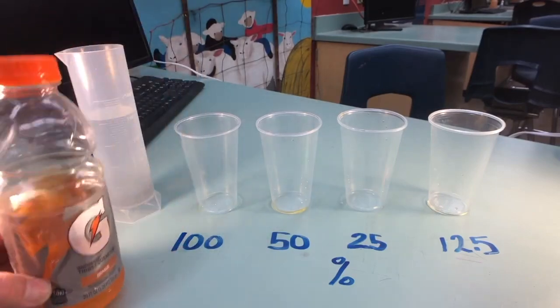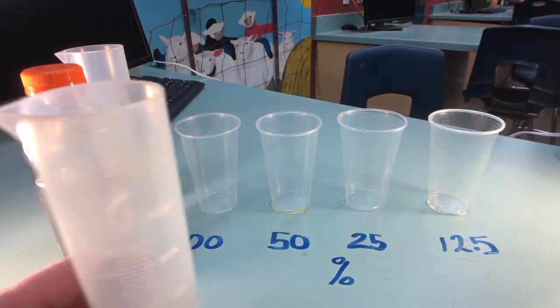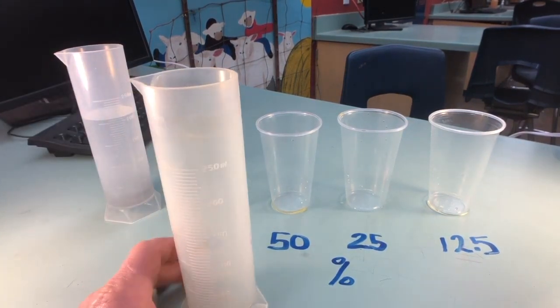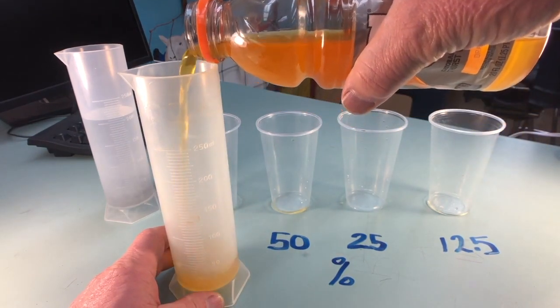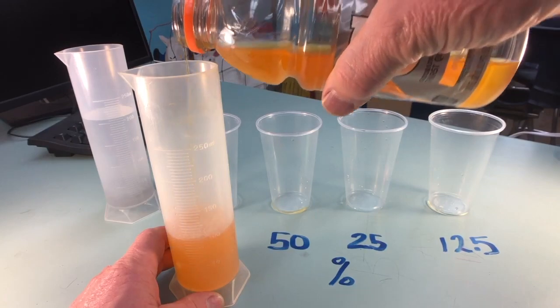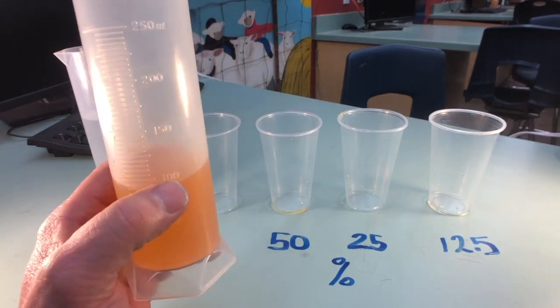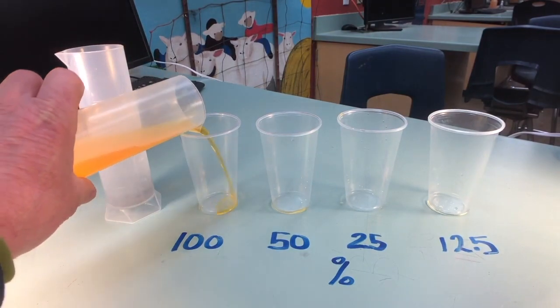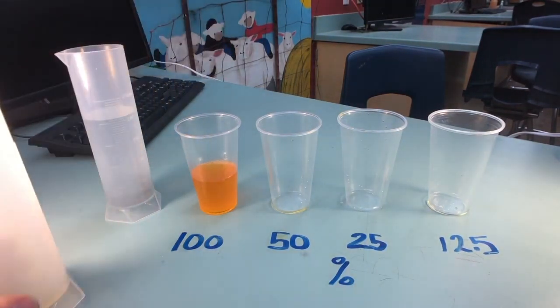We're going to be putting 100 cc's or ml's into the 100% container. We're going to be using graduated cylinders to do that. But to start with, I'm going to go ahead and put 100 ml's of Gatorade in the container and pour that into our vial or flask, or in this case, just a cup. 100 ml's will go into 100% solution. Make sure we get all that out of there.